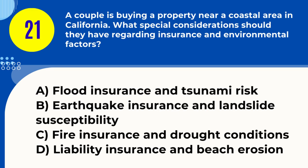Question 21. A couple is buying a property near a coastal area in California. What special considerations should they have regarding insurance and environmental factors? A. Flood insurance and tsunami risk B. Earthquake insurance and landslide susceptibility C. Fire insurance and drought conditions D. Liability insurance and beach erosion. Answer: A. Flood insurance and tsunami risk. Explanation: In coastal areas of California, buyers should consider the need for flood insurance due to the risk of flooding and tsunamis.